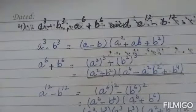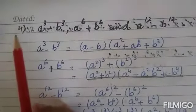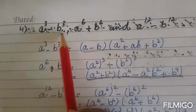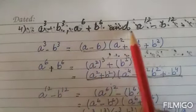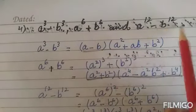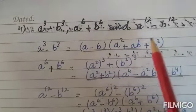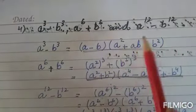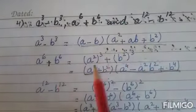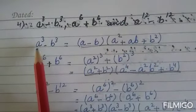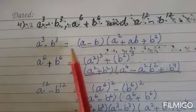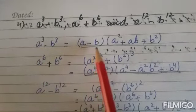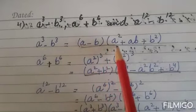Question number one, fourth part. We have three polynomials: A³ - B³, A⁶ + B⁶, and A¹² - B¹². We will find the LCM by factorization. First of all, we make factors of the first polynomial, A³ - B³.